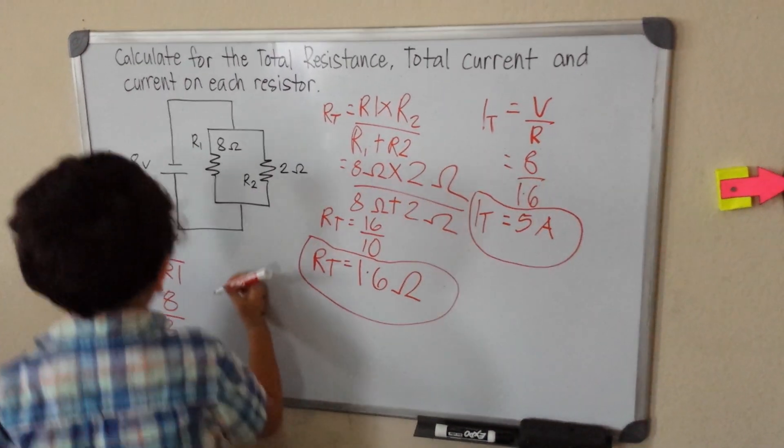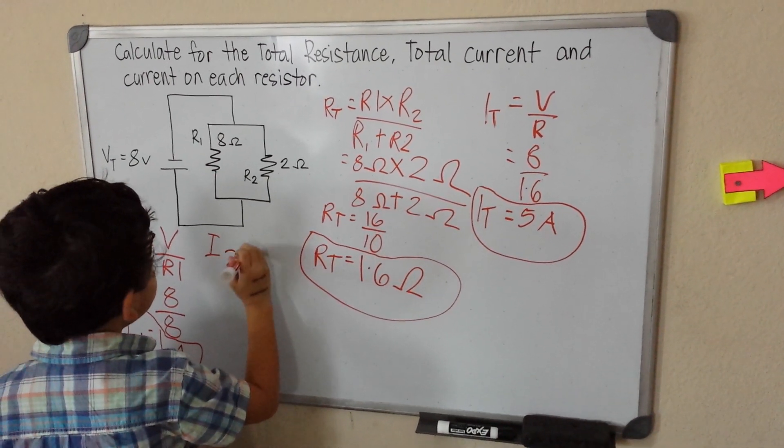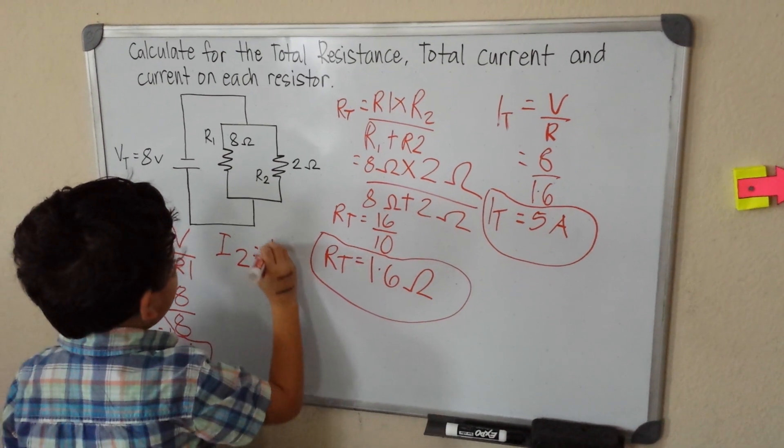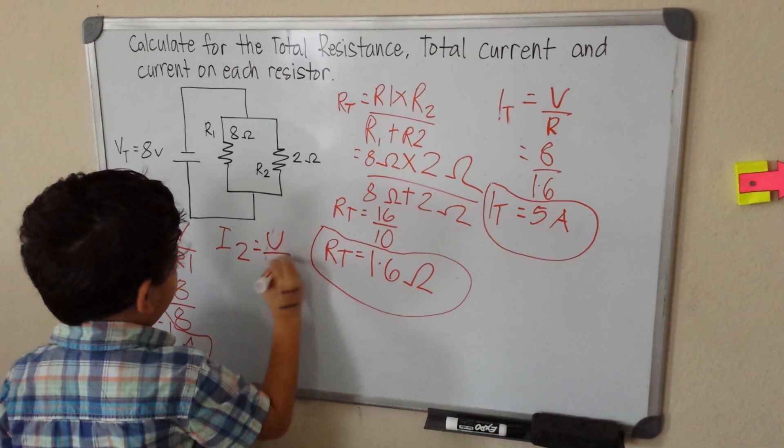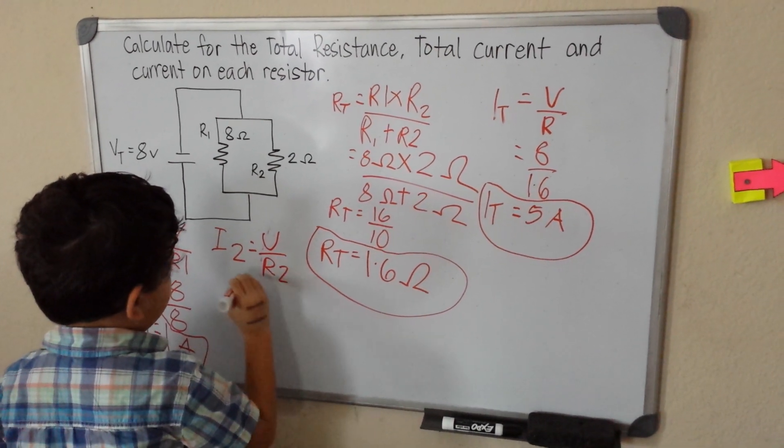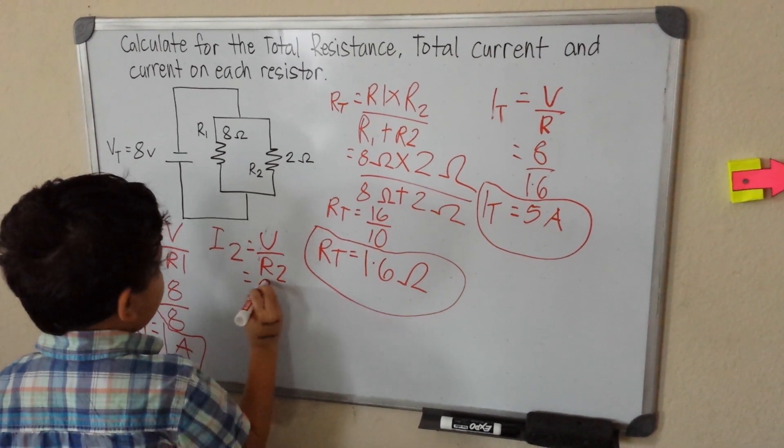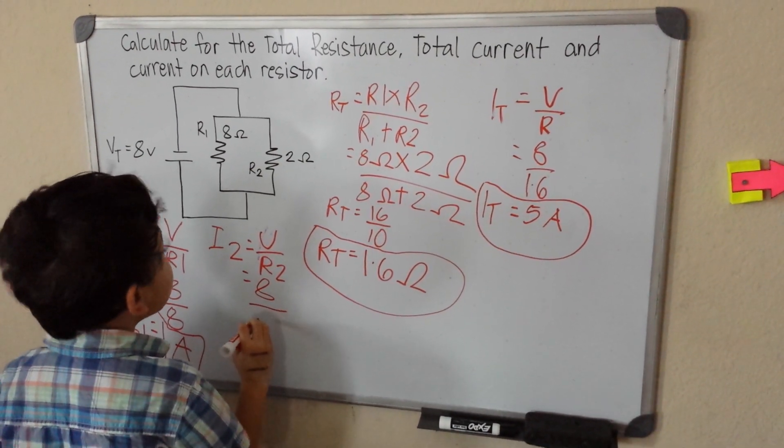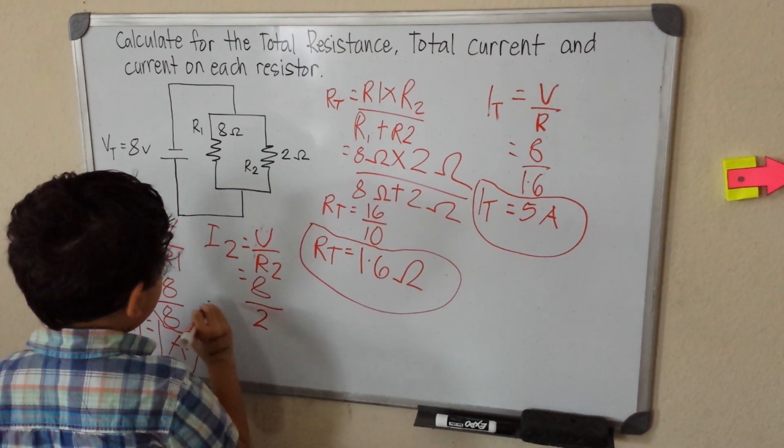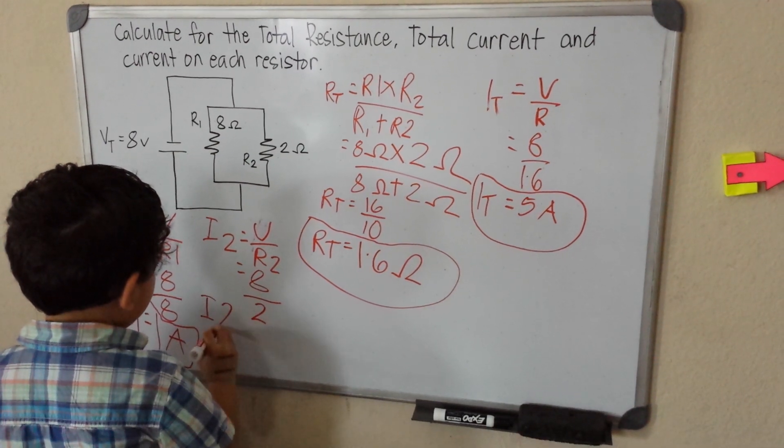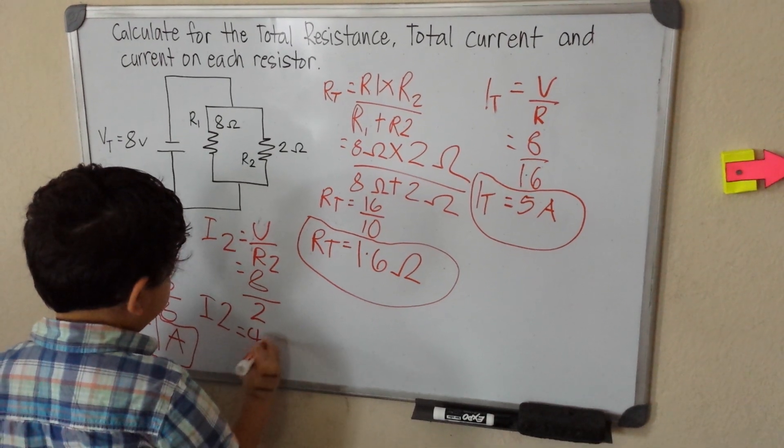And then I will put I2 beside it. I2 is V over R2. So what is our V? 8. Over R2, which is 2. I'm going to do 4 amperes.